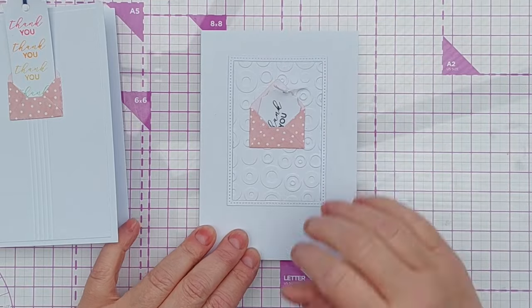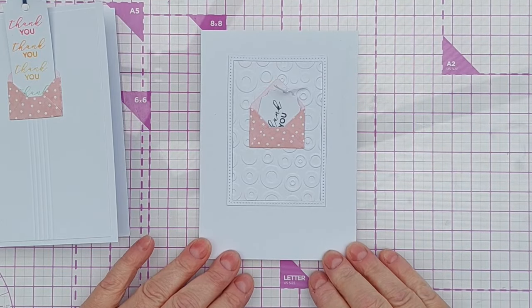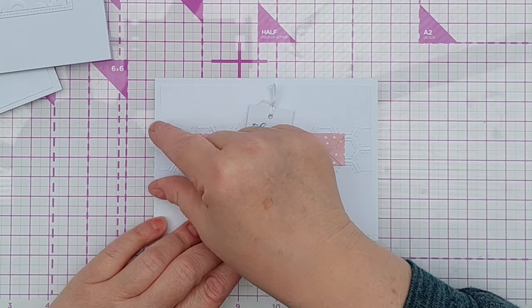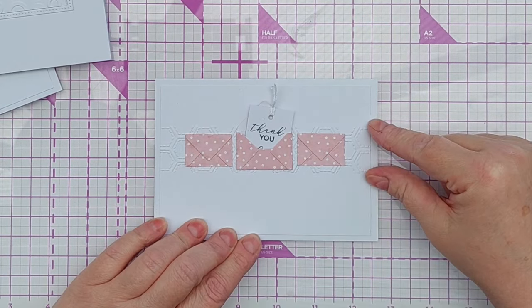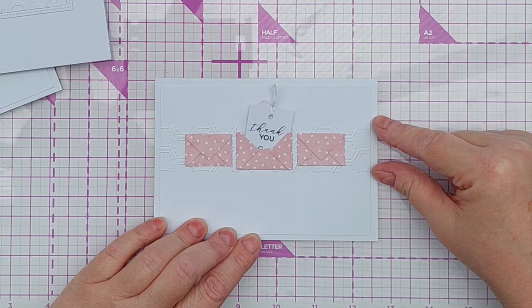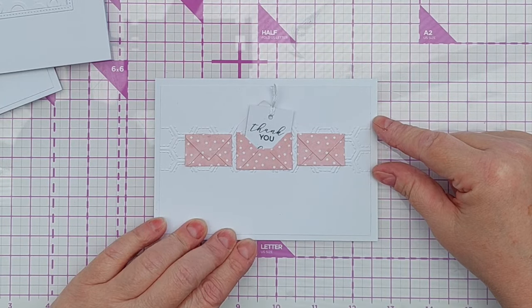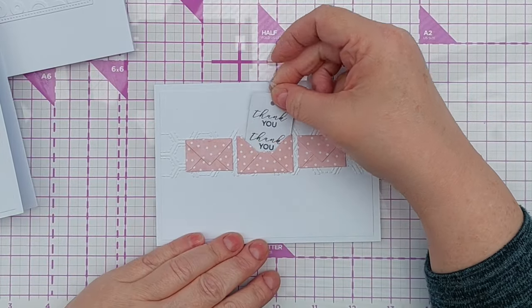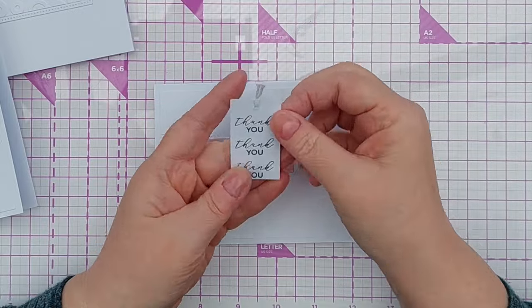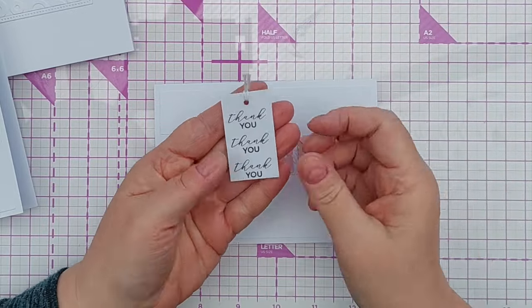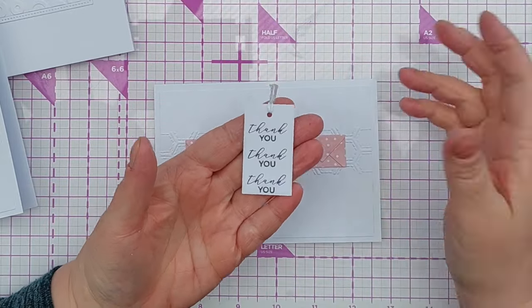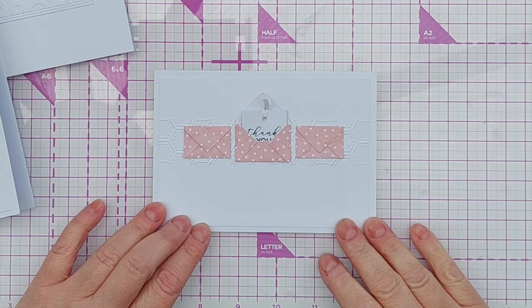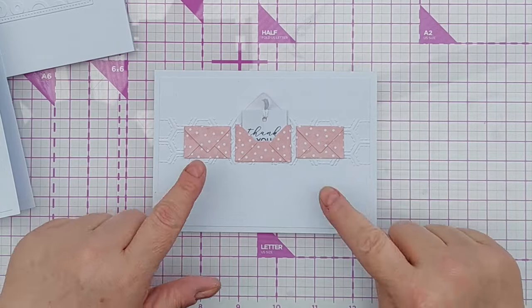But I still think it works really well as a clean and simple interactive card. This one here, I did cut the slit in. So I took a panel, I embossed part of the panel with a long thin embossing folder, and then I did exactly what I did here by cutting the slits. I made a thank you tag again. This one hasn't got a tag top, it's just a rectangle with a hole punched in it, and it works really well.